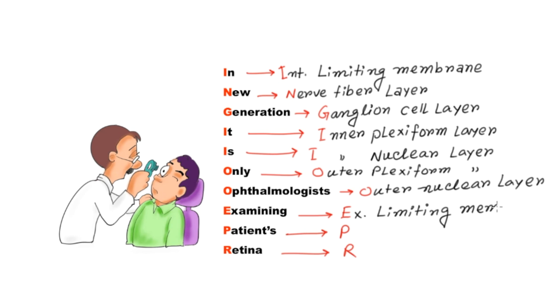And X for external limiting membrane, and P for photoreceptors, and R for retinal pigmented layer.